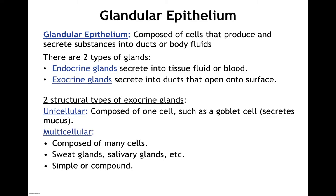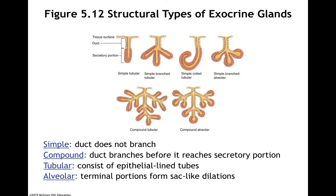Structurally, exocrine glands can be unicellular or multicellular. Unicellular ones are single-cell — those goblet cells we talked about are unicellular exocrine glands. Multicellular glands are composed of many cells, such as sweat glands and salivary glands, and they could be simple or compound. In a simple gland, the duct — the exit to the surface — does not branch. In a compound gland, the ducts branch before they get to the secretory portion.